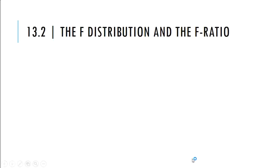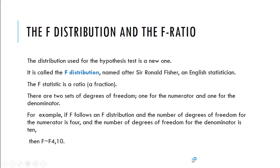So let's talk about the F distribution and the F ratio. The distribution used for this hypothesis test is a new one. It's called the F distribution, and it was named after Sir Ronald Fisher, an English statistician. An F statistic is a ratio, basically a fraction. There are two sets of degrees of freedom, one for the numerator, one for the denominator.